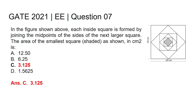So the right answer for GATE 2021 Electrical and Electronics Engineering question number seven is option C, that is 3.125 square centimeters. Thank you.